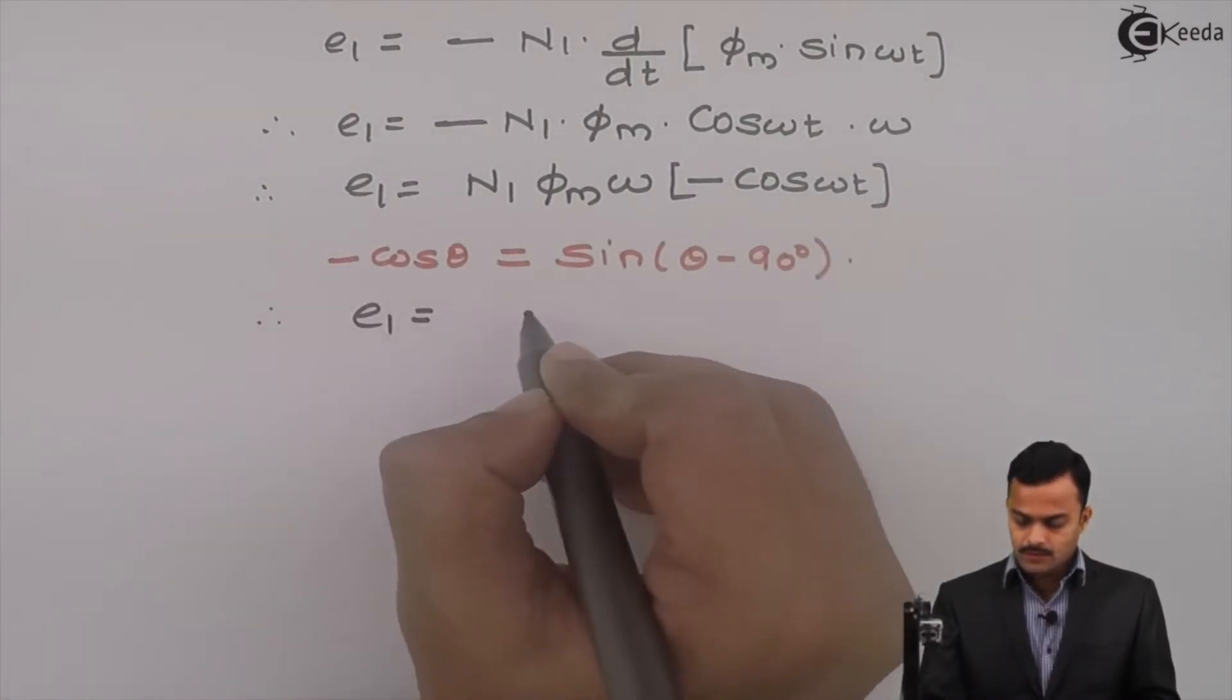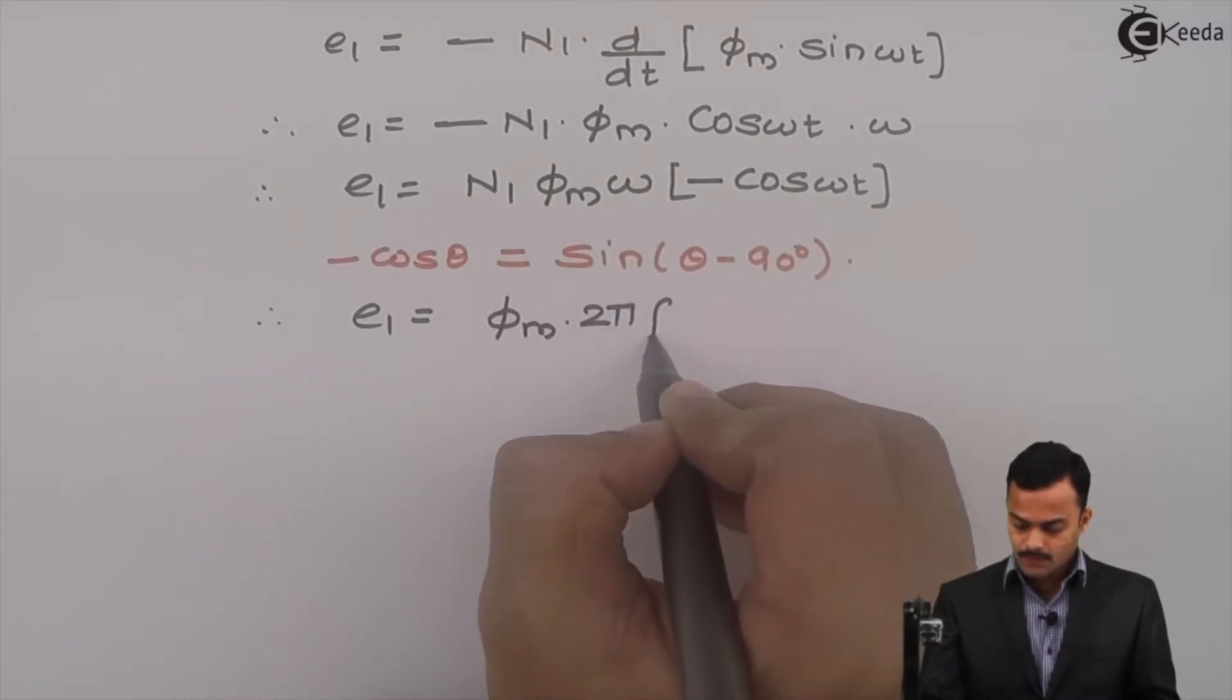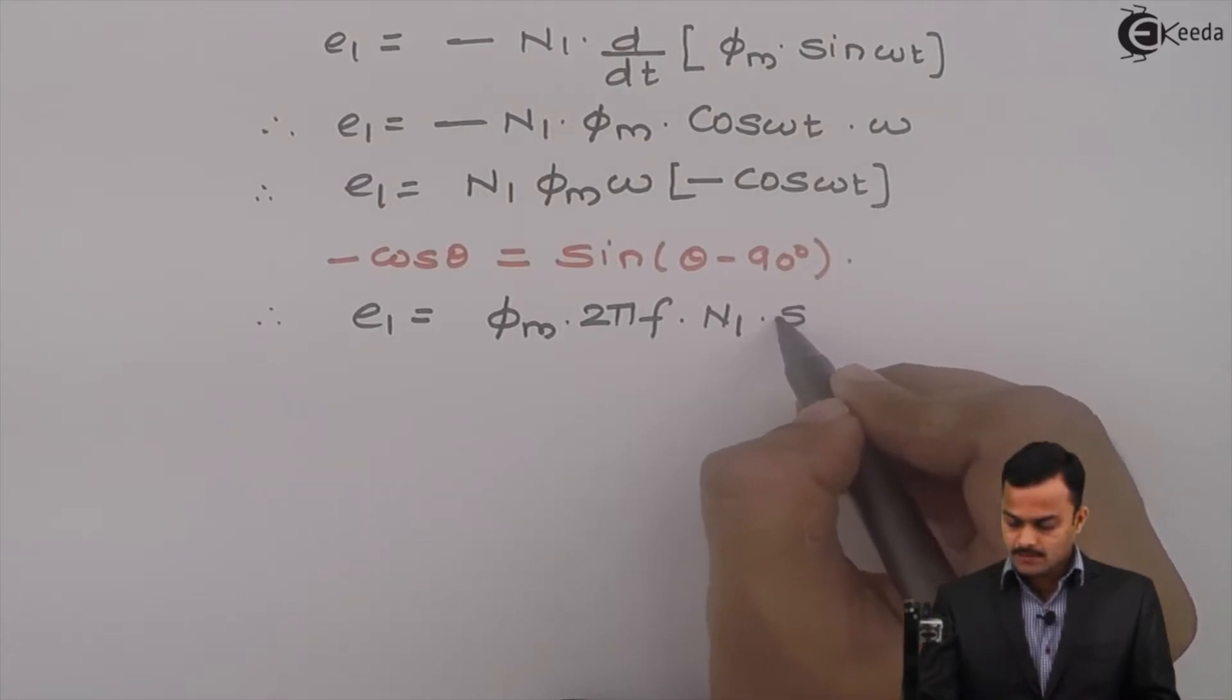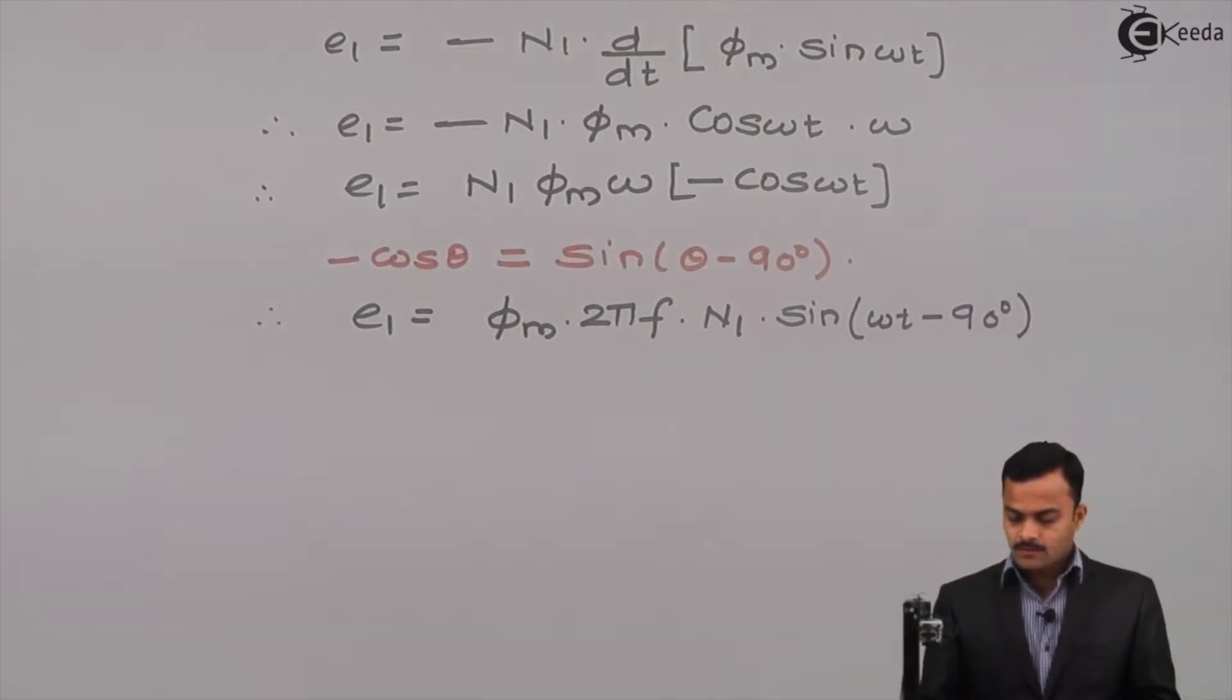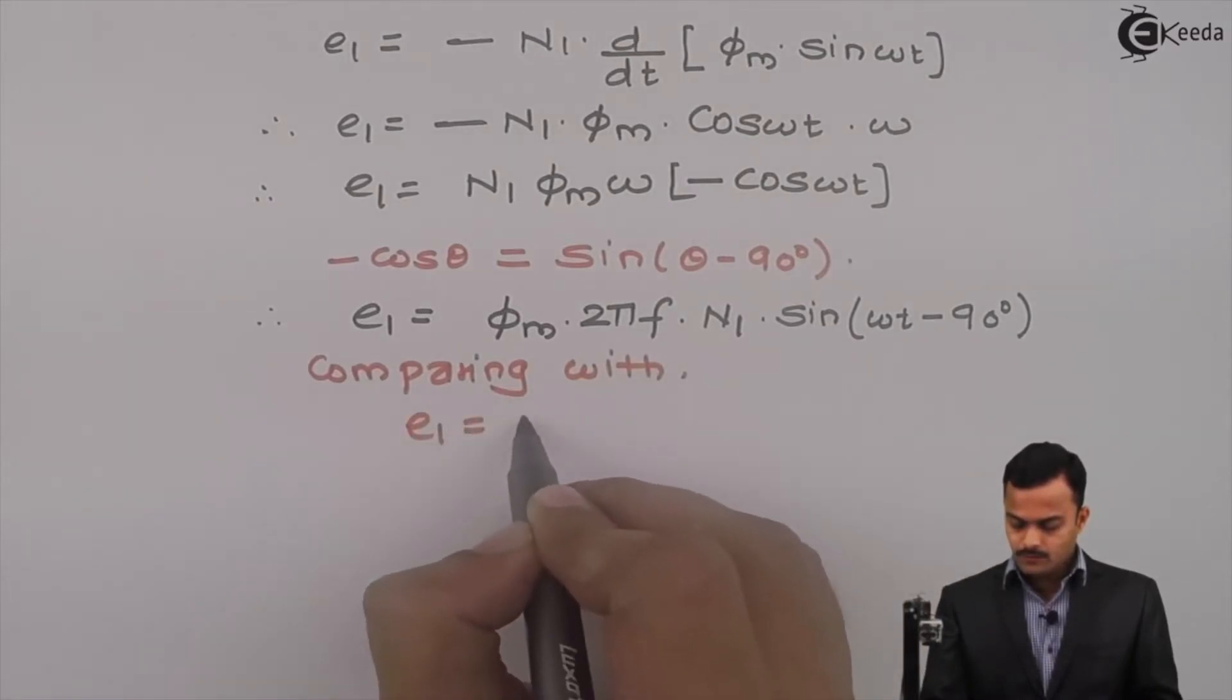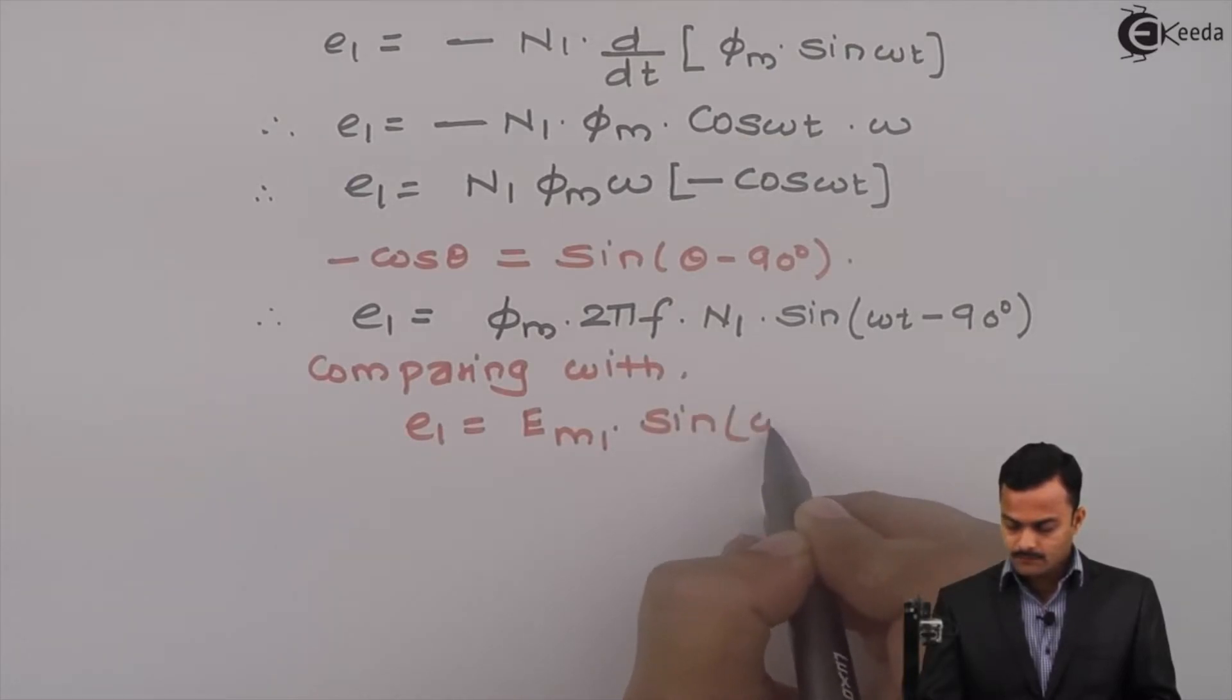E1 equal to phi m, omega is 2 pi f, n1, sin omega t. I can write sin omega t minus 90 degrees. This is the standard equation. I can compare with E1 equal to E m1 sin omega t plus psi.